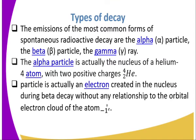The most common forms of spontaneous radioactive decay are: alpha, beta, and gamma radiation. An alpha particle is actually the nucleus of a helium atom.